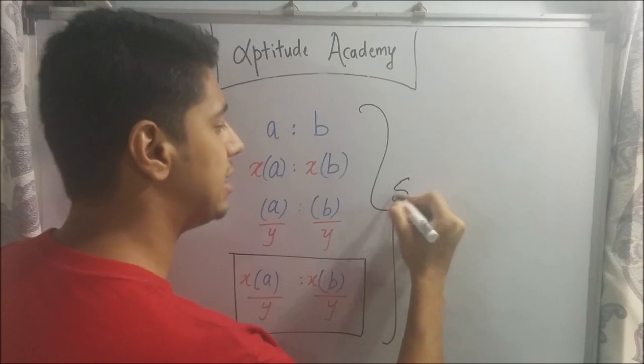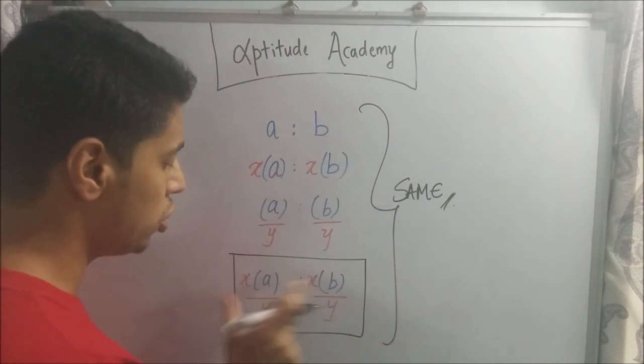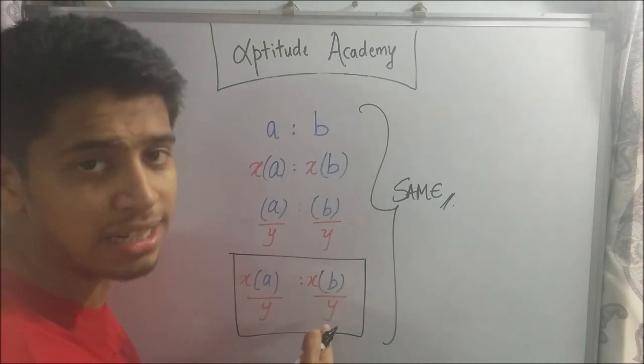So, in general, XA by Y is to XB by Y is the same as A is to B. So, all of these are the same. So, when simplifying ratios, you will need to multiply sometimes or divide sometimes. Just know that all of these are the same.